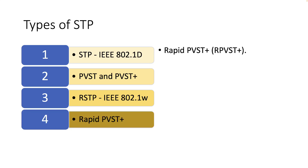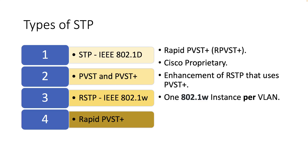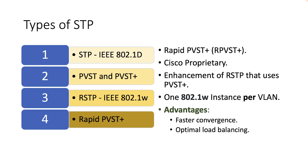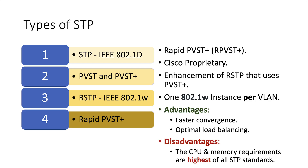Then, there is Rapid PVST Plus, which is a Cisco enhancement of Rapid STP that uses PVST Plus and provides a separate instance of 802.1W for every VLAN. This Cisco proprietary version addresses the convergence issue of PVST Plus and the suboptimal traffic flow issue of Rapid STP. However, the CPU and memory resources requirements are the highest of all STP standards.